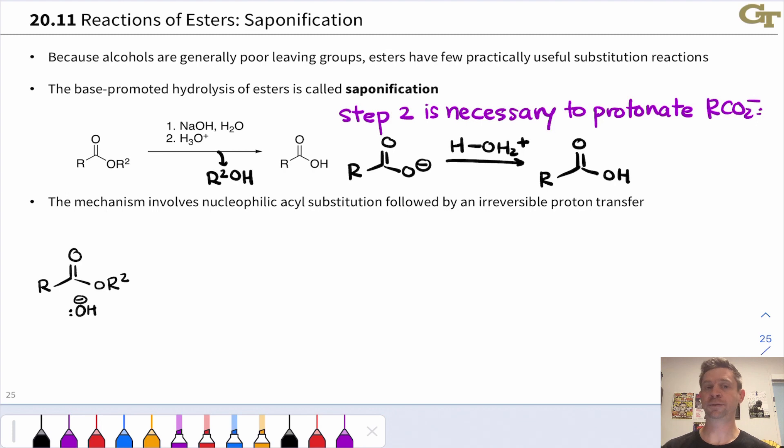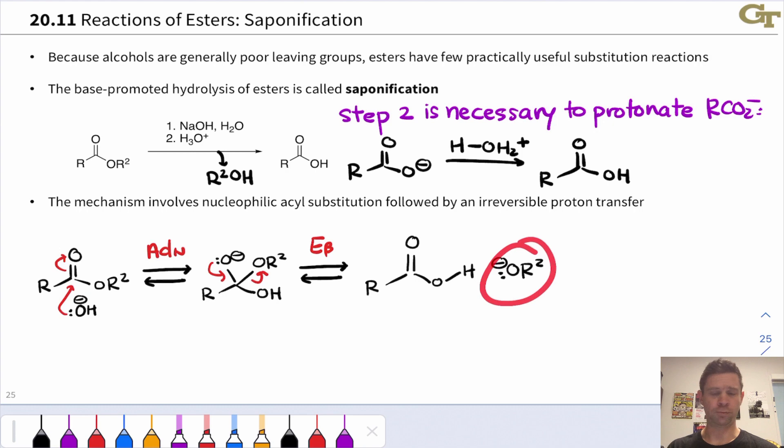This is a base-promoted nucleophilic acyl substitution, and hydroxide is basic enough to add into the carbonyl carbon, at least reversibly, to produce an alkoxide intermediate. At this point, we can beta-eliminate the OR2- group, and this is still reversible, because we've just moved negative charge from an O- at the start to an O- at the end. No profound structural driving force here.